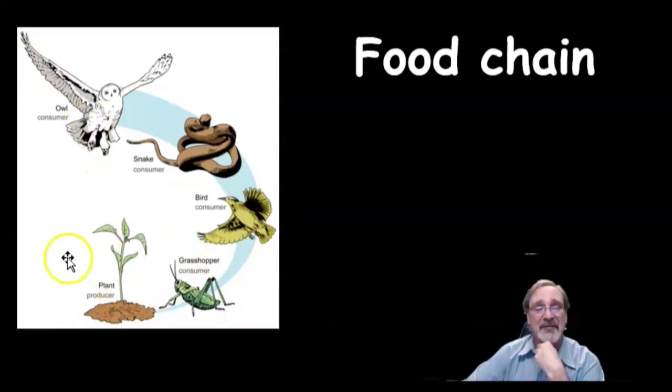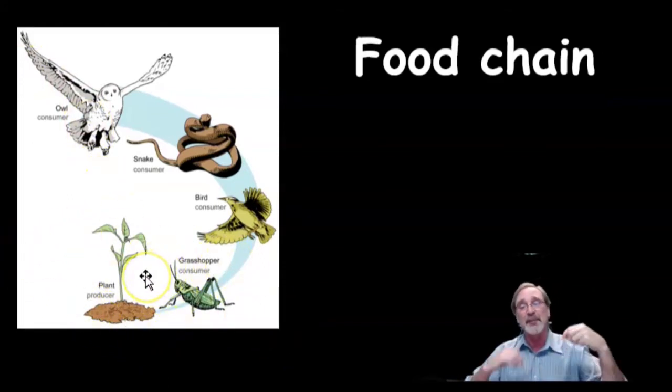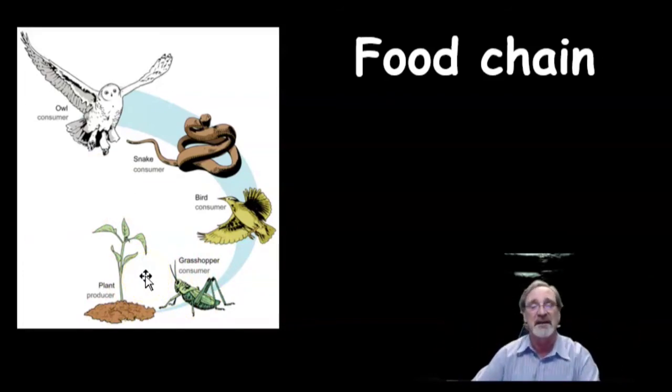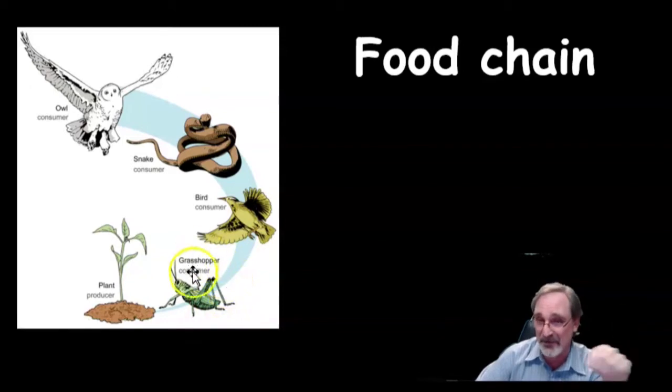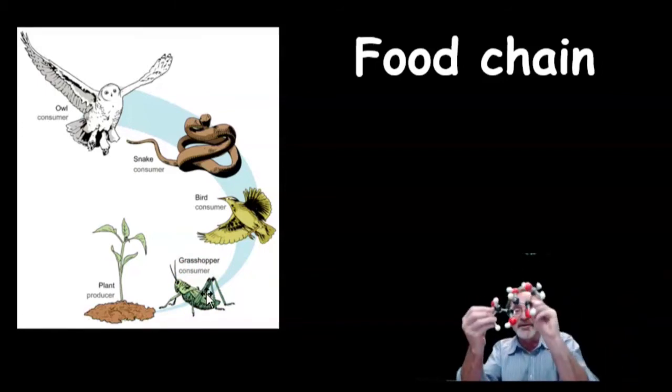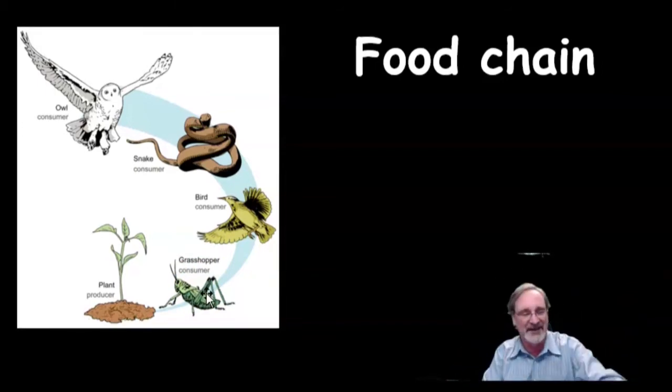Food chain. Here the plant is the producer - it produces the food by doing photosynthesis. And the food is the chemically stored energy, stored in the glucose molecule. The glucose molecule stores that energy kind of like a spring stores energy in a dart gun.